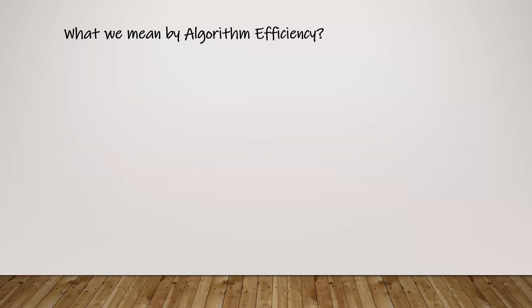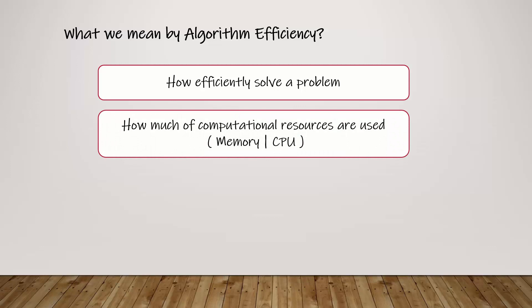So what we mean by algorithm efficiency? Algorithm efficiency shows how efficiently an algorithm solves a problem. This is a matter of computational resources. An algorithm is said to be efficient if it uses minimum amount of resources such as memory and CPU.